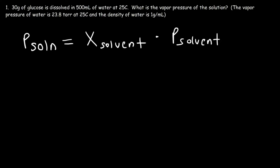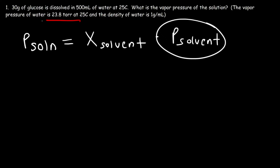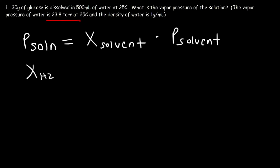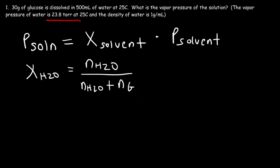Here's an example. The vapor pressure of pure water is 23.8 torr, and our goal is to calculate the vapor pressure of the solution. We have glucose and water, so our answer should be less than 23.8 torr. We already have P of the solvent — that's the vapor pressure of water. Water is the solvent and glucose is the solute. What we really need to find is the mole fraction of the solvent, which is the mole fraction of water — equal to moles of water divided by total moles in solution.